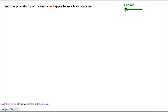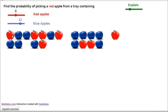So what we're going to do is look at picking a red apple from a tray that contains 8 red apples and 12 blue apples. Now I had to look a long way to find blue apples, believe me. But here they are, you've got some red apples and you've got some blue apples.